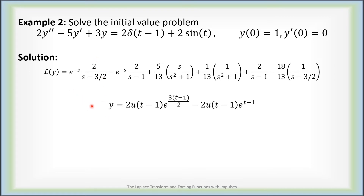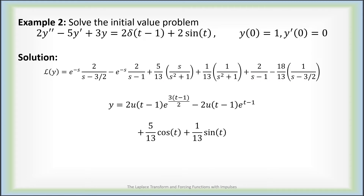We take the inverse Laplace transform term by term. For the exponential terms, we have a step function times an exponential. The factor of (s minus 3/2) in the denominator would normally correspond to e to the 3/2 t, but since we have a step function at time 1 it gets shifted by 1. Similarly, the other term would normally be e to the t but it's shifted and the constant multiple of 2 is factored out. For the remaining rational terms, we get 5/13 times cosine of t plus 1/13 times sine of t, then 2e to the t and 18/13 e to the 3/2 t. So term by term, here is our function y.